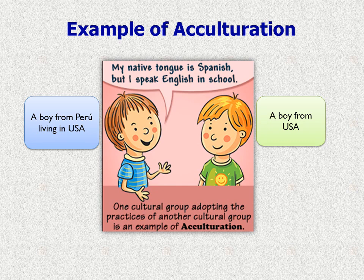On the left side we can see a boy, maybe a boy from Peru living in the USA. And on the right side we see a boy maybe from the USA. This Peruvian boy says: 'My native tongue is Spanish, but I speak English in school.' So maybe the parents of this boy have traveled to the USA for work, and this boy is learning English in the USA. One culture group adopting the practices of another culture group is an example of acculturation.